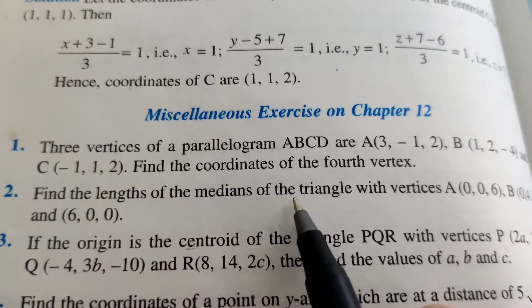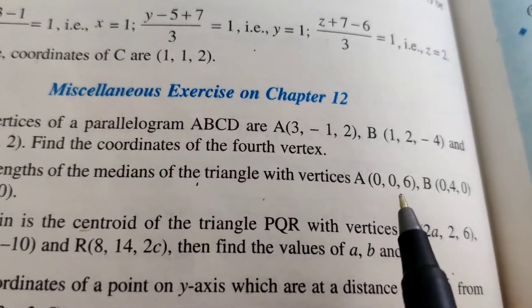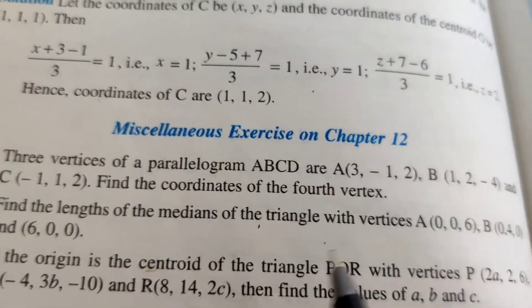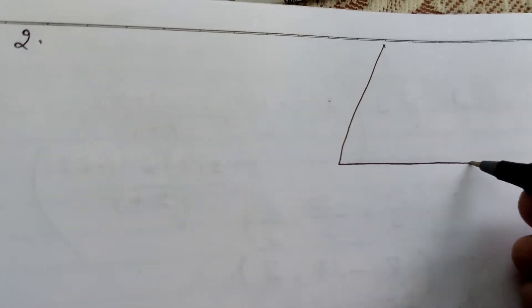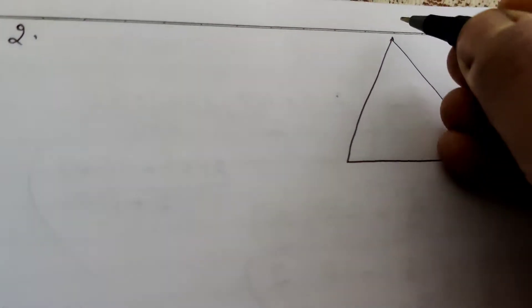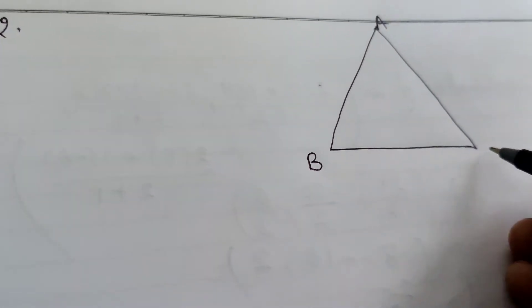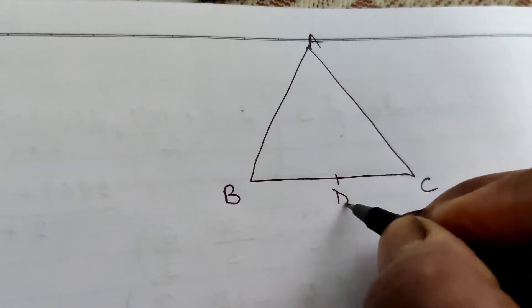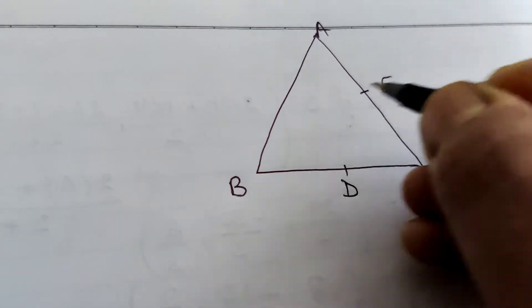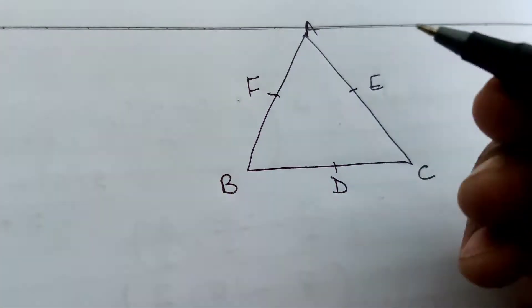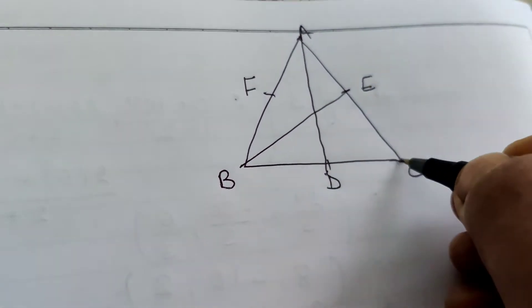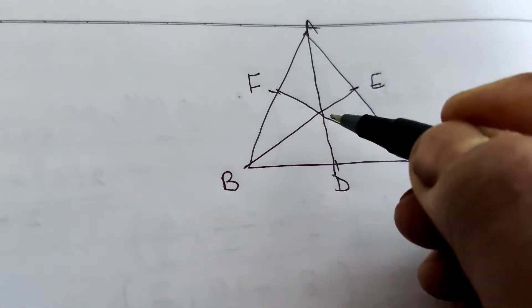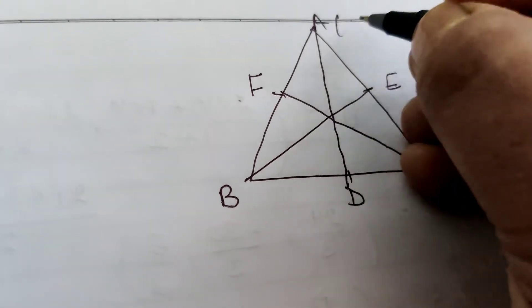Question number 2: Find the length of the medians of the triangle with vertices A(0, 0, 6), B(0, 4, 0), and C(6, 0, 0). Here triangle ABC has D, E, F as midpoints of BC, AC, and AB respectively. AD, BE, and CF are the medians. We need to find the length of AD, BE, and CF.